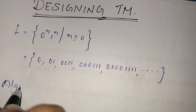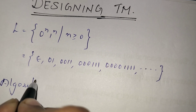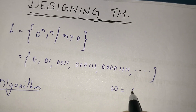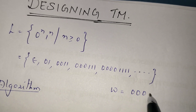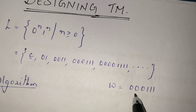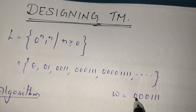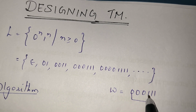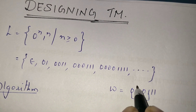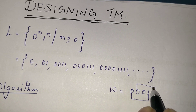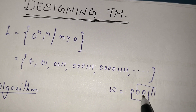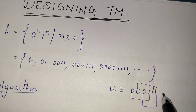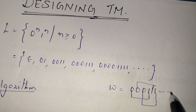What will be the algorithm? What are the steps? Suppose I am taking the string 000111. The logic is: for the first 0 I need to find the matching first 1. For the second 0 I need to find the second 1. For the third 0 I need to find the third 1. Then the remaining will be the blank symbol.